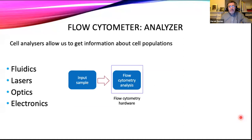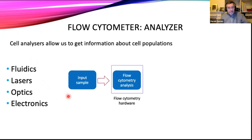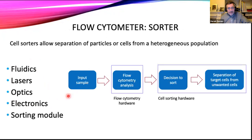Most of us are familiar with flow analyzers. No matter who we buy our flow analyzer from, it will have the same basic components: a fluidic system to take our cells through the machine and hydrodynamically focus them for single cell measurements; one or more lasers to excite the fluorochromes; an optical system with long-pass, short-pass, and band-pass filters to separate light; and an electronic system to capture and quantitate that light. A cell sorter also has all of those components — it just has an extra part: a sorting module.